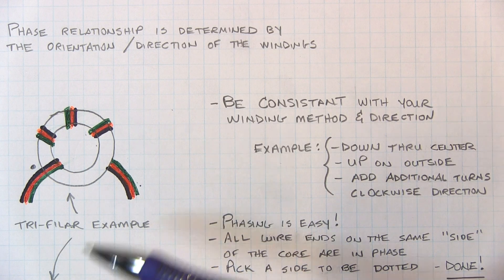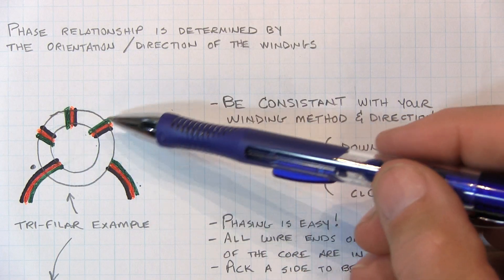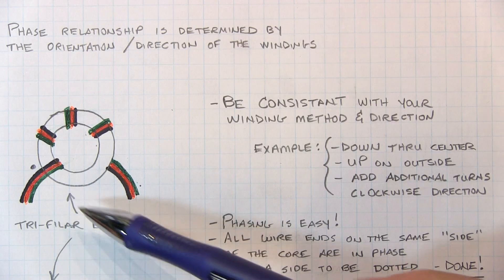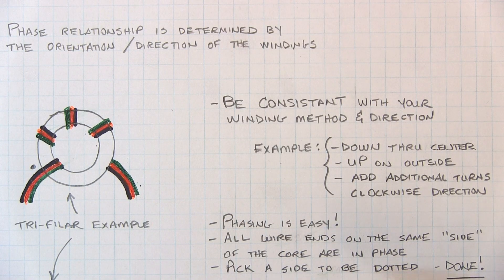And in that case, you want to be careful that when you start adding your additional secondaries, that you again follow the same convention that you used for all of the other windings. And if you do that, again, the phasing really just takes care of itself.